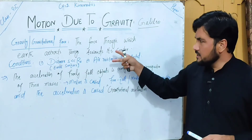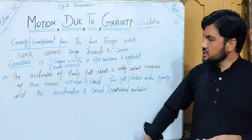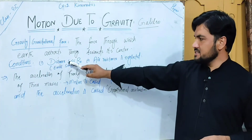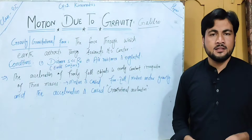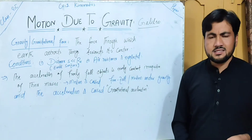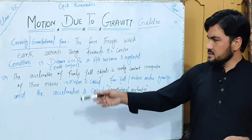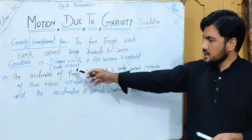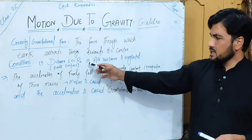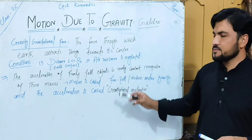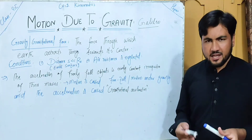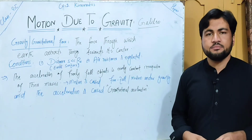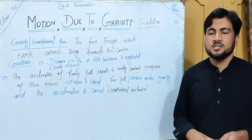The first condition is that the object's distance of motion is very small compared to the radius of the earth — near the earth's surface. The second condition is that air resistance is neglected.